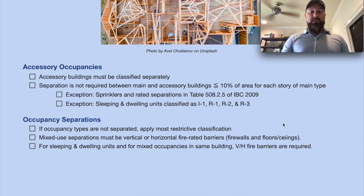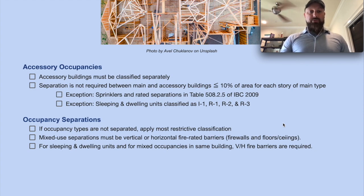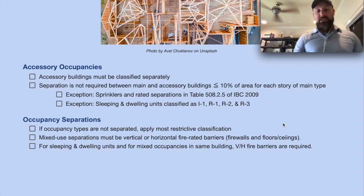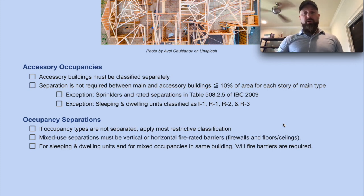There is an update for 2021 that's not in the Code Check Commercial yet. The other exception is sleeping and dwelling units classified as I1, R1, R2, and R3.